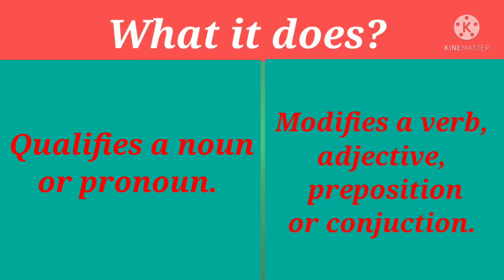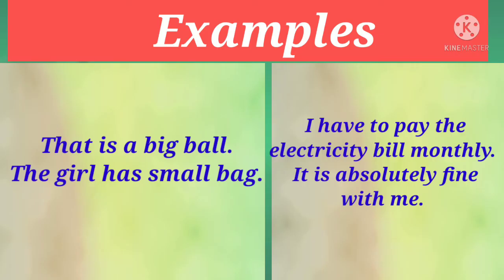Let's take some examples. 'That is a big ball' — ball is a noun here, और उसको define कर रहा है big। कैसी ये ball? Big है। 'The girl has a small bag' — bag is a noun here, but कैसा bag? Small bag। So small is an adjective here.